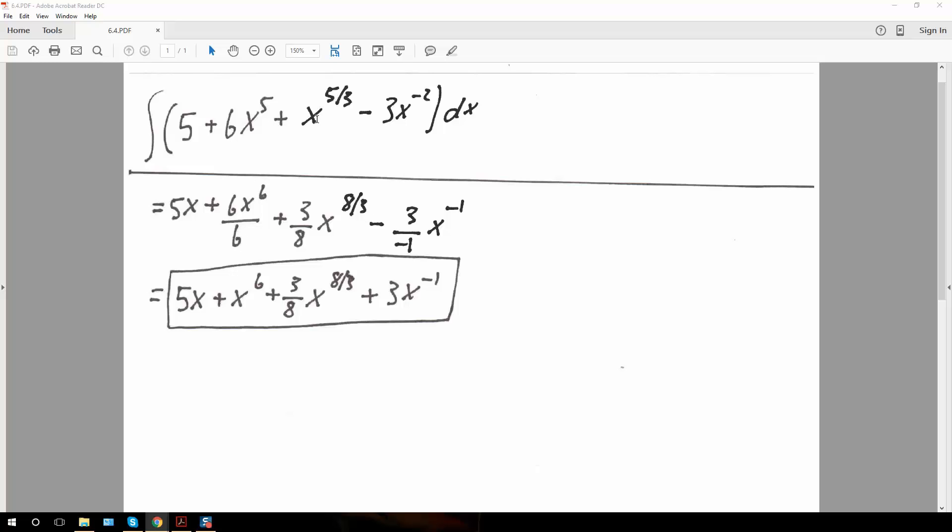And we have x raised to the 5 over 3. We add 1, so we can say plus 3 over 3, we would get 8 over 3, and then we divide by 8 over 3, which is equivalent to 3 over 8.